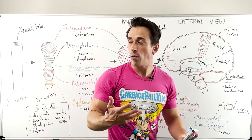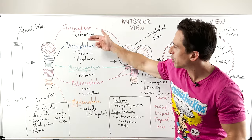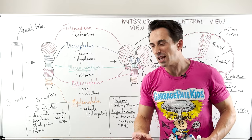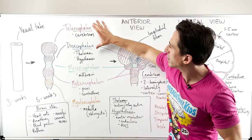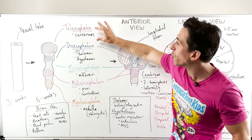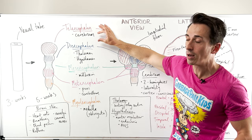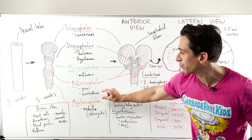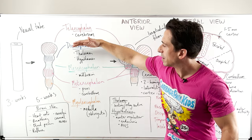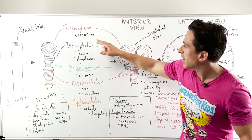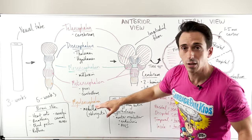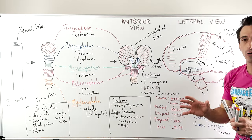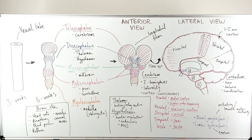So what we've gone through: telencephalon, diencephalon, mesencephalon, metencephalon, myelencephalon. Sometimes you'll see the first two put together as the prosencephalon, and the last two put together as the rhombencephalon. But these are the five important vesicles you need to know, the important substructures or landmarks of the brain they produce, and their various functions as an overview. I hope that helps.